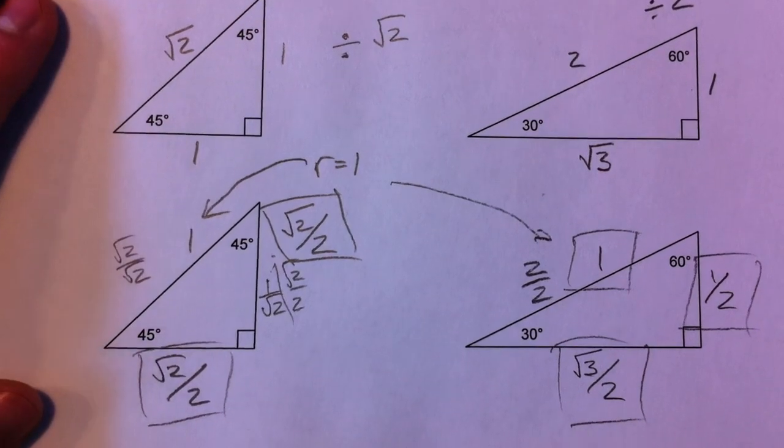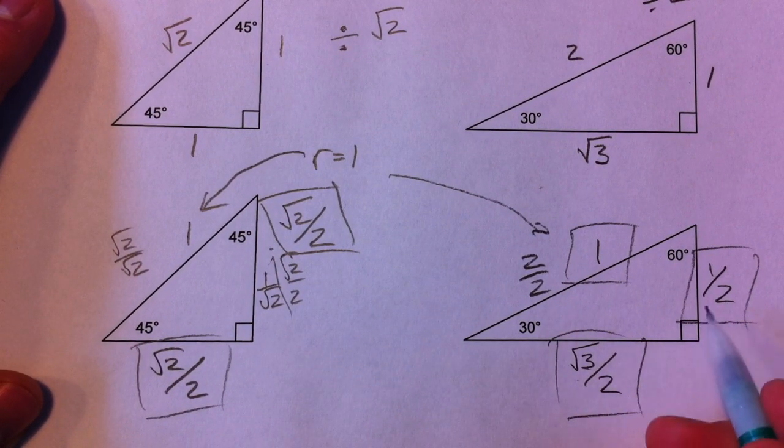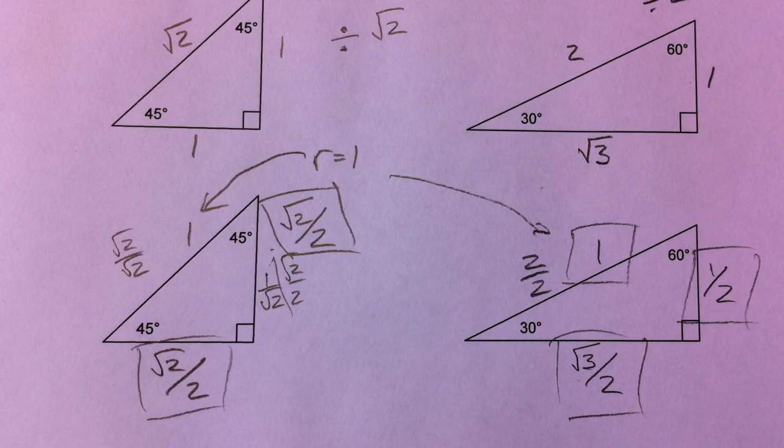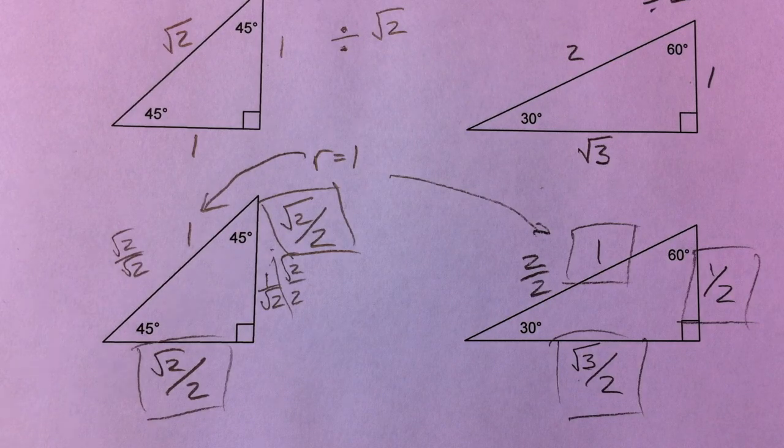So, go to your unit circle, fill out all of these x's and y's, positive, negative, and things like that. And it'll give you the overall picture. Not that we're going to use the unit circle every time, but it'll give you the overall picture so that you can do it.